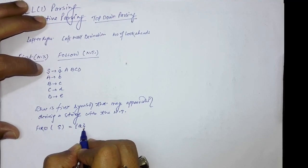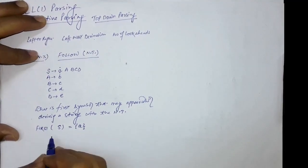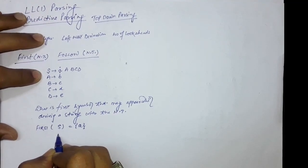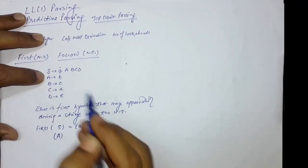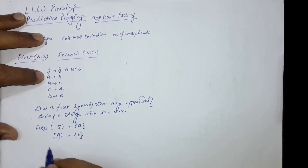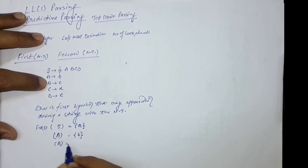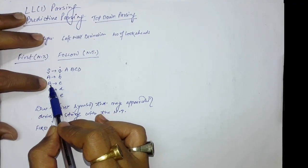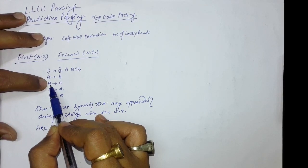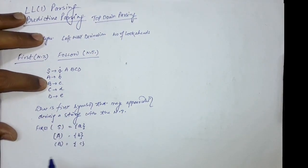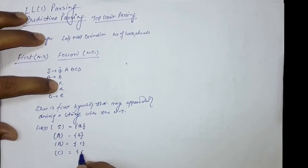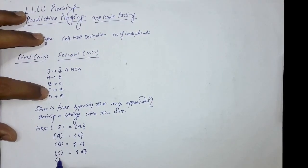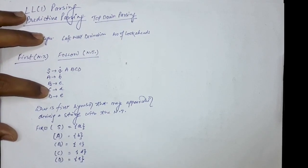Why small 'a'? Because if we derive a string with capital S, there should come an 'a'. Similarly, FIRST(A): if we derive a string with capital A, the symbol that appears is small 'b'. FIRST(B): deriving with capital B gives small 'c'. If we derive a string with capital C, the symbol is small 'd'. And if we derive a string with non-terminal D, the symbol which may come is small 'e'.